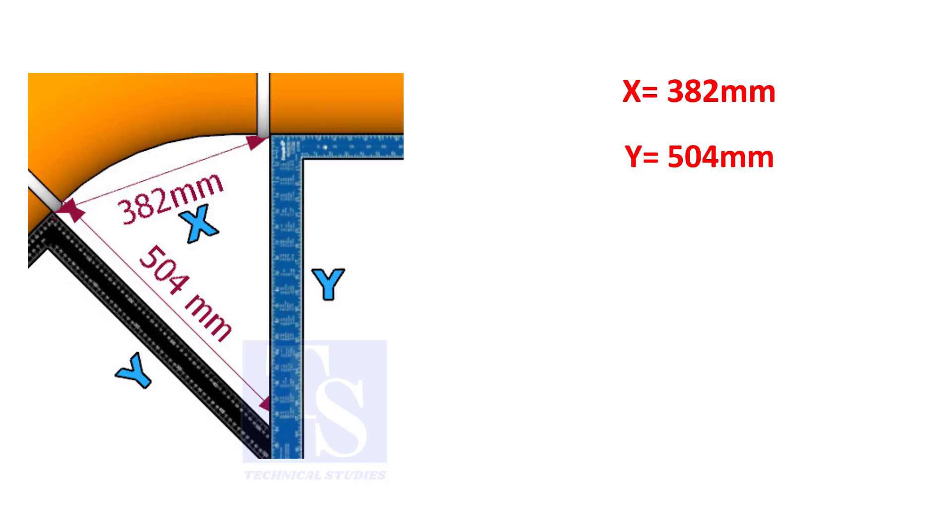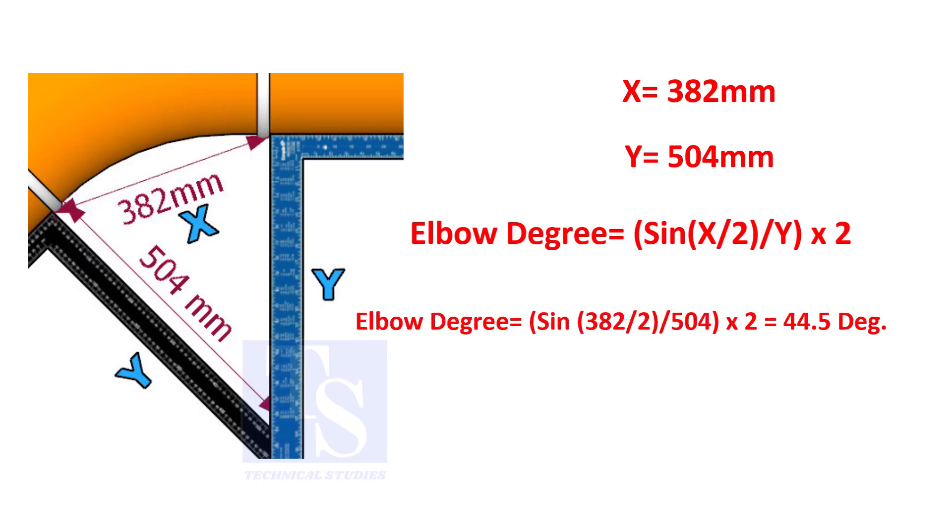Assume that the value of X is 382 and the value of Y is 504. Divide the half value of 382 by 504 and convert the value to sine, then multiply by 2.